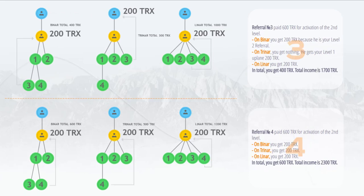Referral number 3 paid 300 TRX to register. In binary, all 2 seats under you are occupied — it moves to the level below and stands under your first-level referral in the first free place out of 2 (overflow). You get nothing; only your level 1 referral gets it. In trinary, they stand in the third free place out of 3 — you get 100 TRX. In Lina, the third free place from unlimited — you get 100 TRX. Total: you get 200 TRX. Total income: 800 TRX.